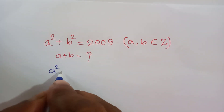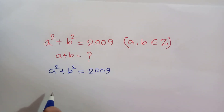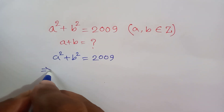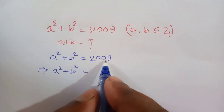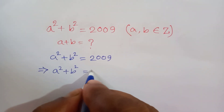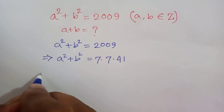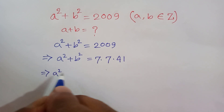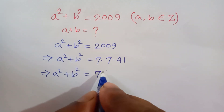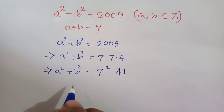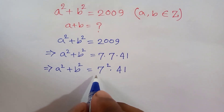We have given a squared plus b squared is equal to 2009. This can be written as 7 times 7 times 41, or a squared plus b squared is equal to 7 squared times 41.